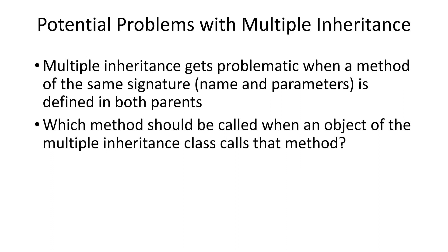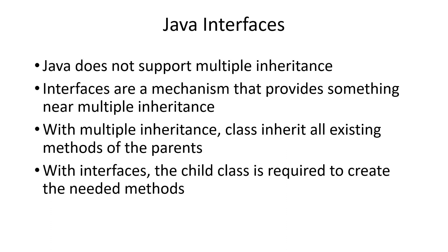There are some potential difficulties with multiple inheritance. The big problems occur when there is a collision between the two parent classes. Imagine both classes have a method with the same name and parameters — the same signature. An object of the child class that inherits from both parents might have to call that method. When it does, which parent's method is used? That's somewhat difficult to define. Java doesn't support multiple inheritance because it presents several difficulties.